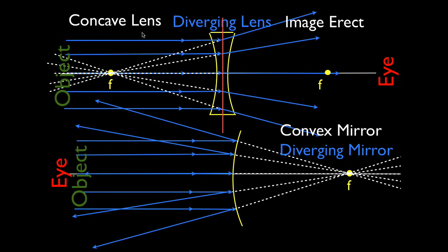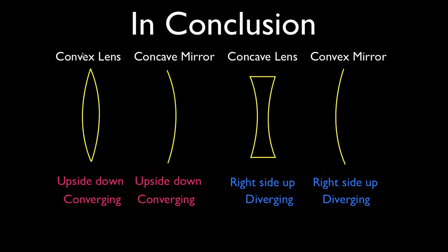To summarize: concave lens and convex mirror have opposite shapes, but they're both diverging devices, and the image in both cases is going to be erect or right side up. Convex lens: converging. Concave mirror: converging. Therefore, the image is going to be inverted most of the time — as long as the object is outside the focal point. Concave lens and convex mirror are both diverging devices, so the image is always going to appear right side up regardless of where the object is, and it will always be a virtual image.